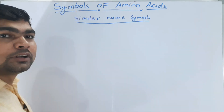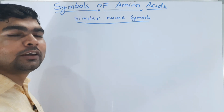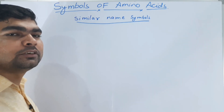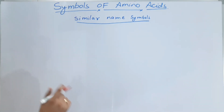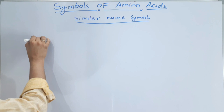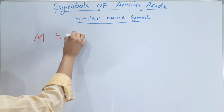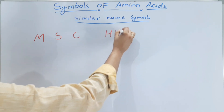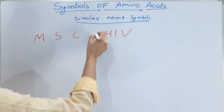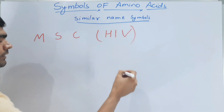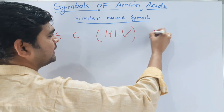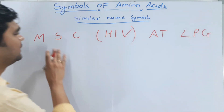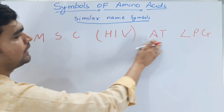The trick is: a person is doing MSc on HIV at a place called LPG. So he is doing MSc at HIV — HIV is the subject — and the place is LPG. So the mnemonic is: MSc, HIV at LPG.